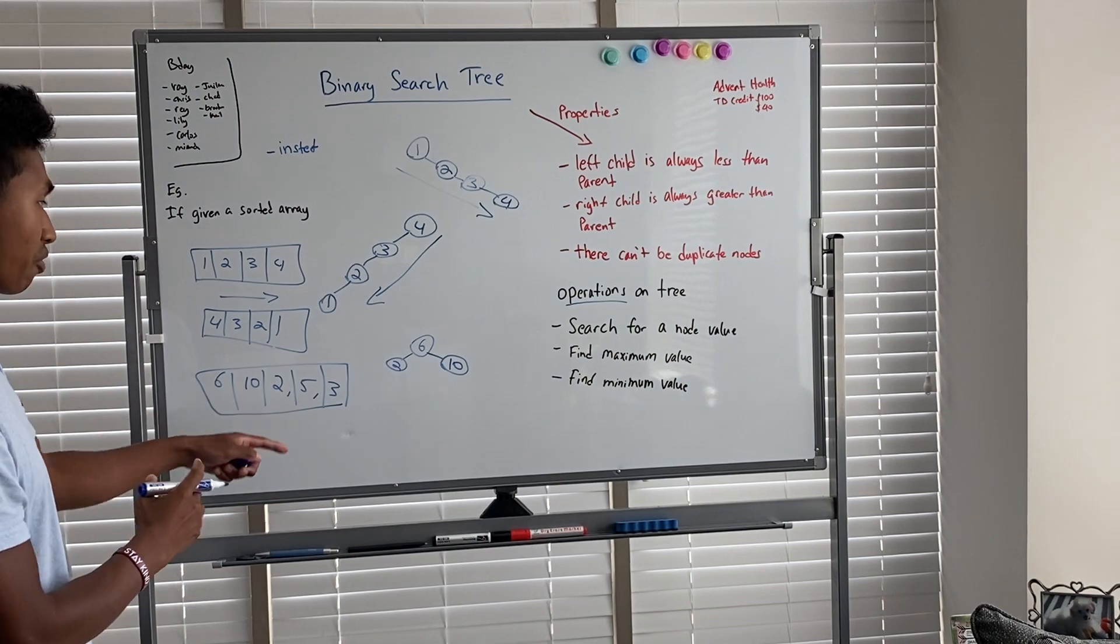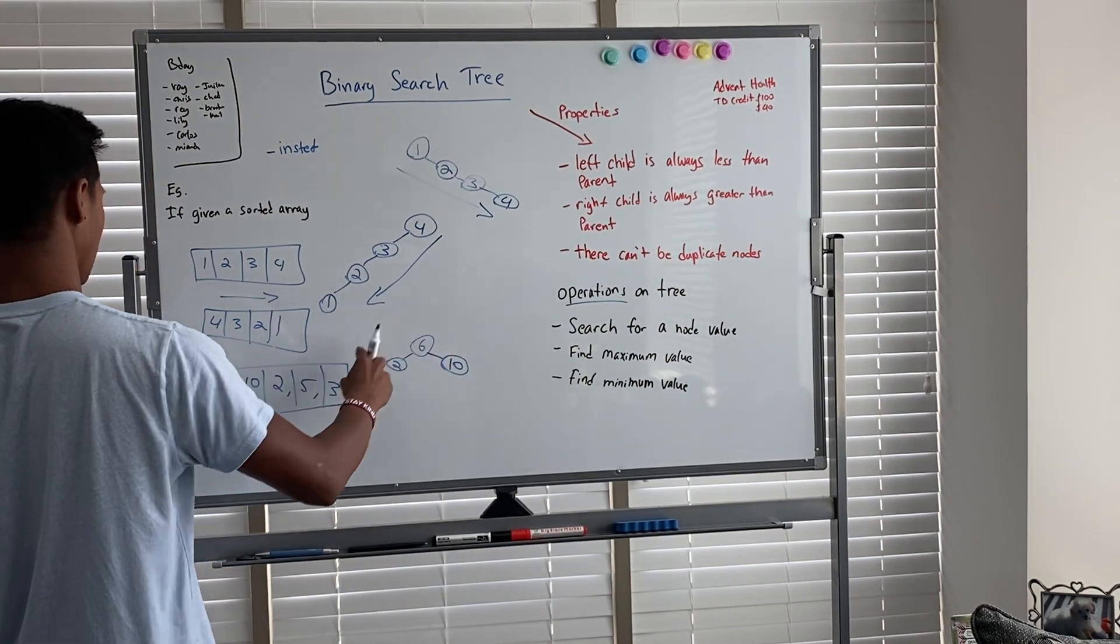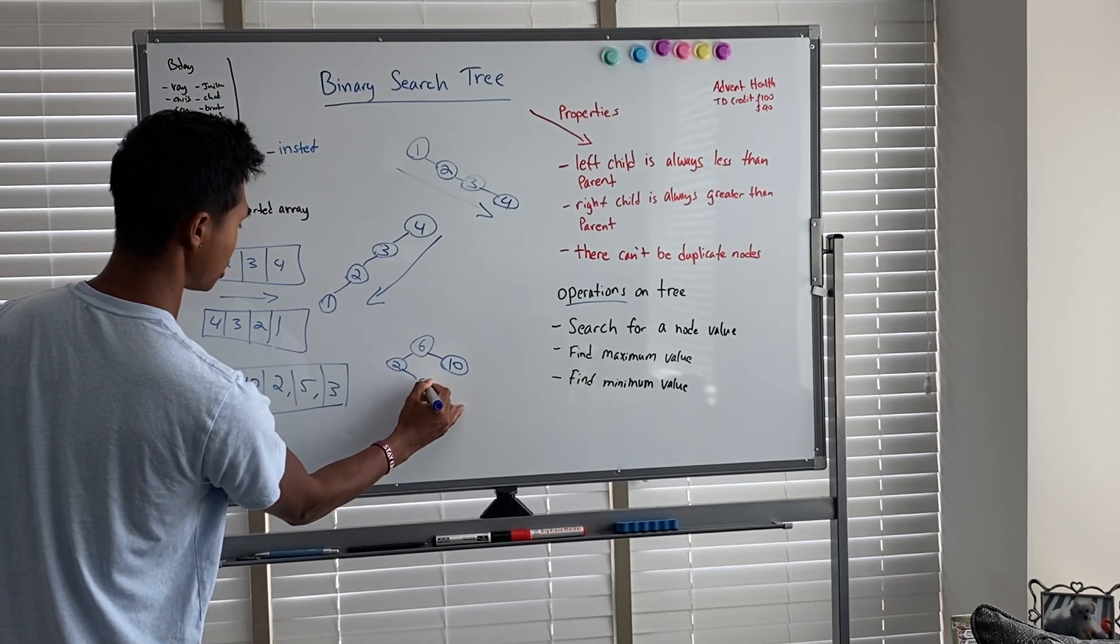And then we look at the number five. Five is also less than six, so we're going to go to the left of that. But it's greater than two, so it's going to go on the right-hand side of two.